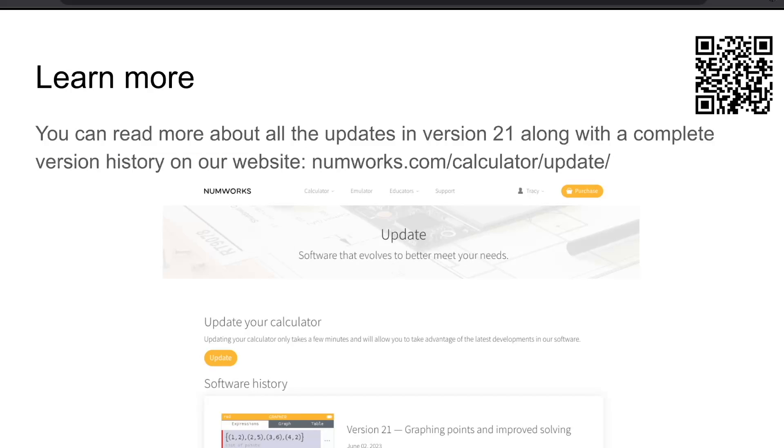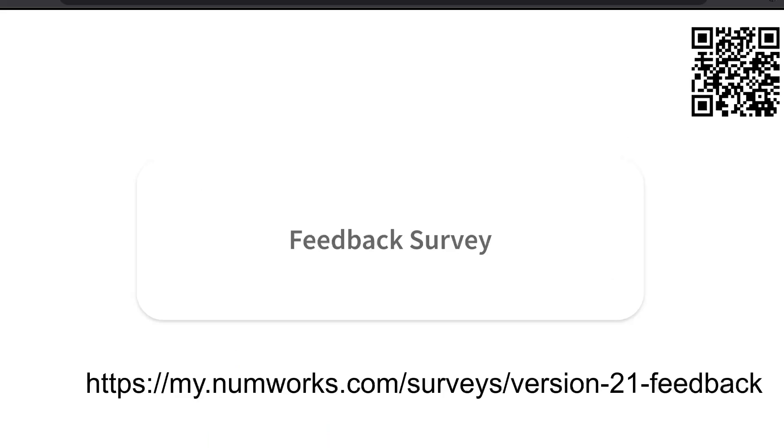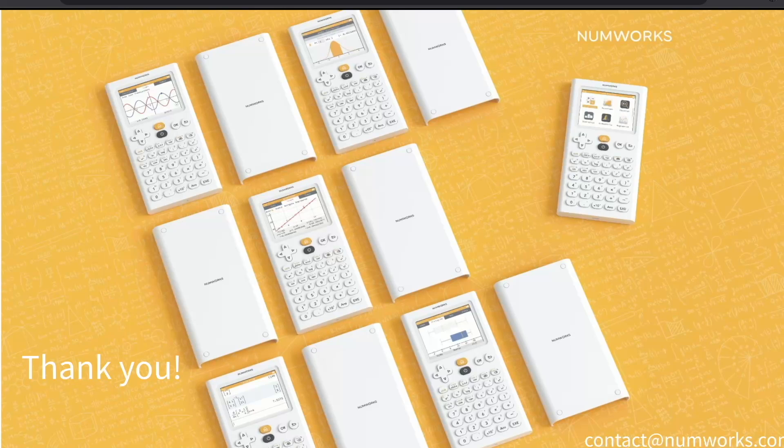If you would like to learn even more about the version 21 update, you can read more about all the updates in version 21, along with a complete version history on our website numworks.com/calculator/update, or you can scan the QR code with your mobile device. At NumWorks, many of our best new features start from teacher feedback. We would love to hear what you think about version 21. Simply type the URL into your browser or scan the QR code to launch the feedback survey. You must be logged into your NumWorks account to access the survey. Thank you for learning more about what is new in version 21. If you have any questions, you can always contact us at contact@numworks.com.